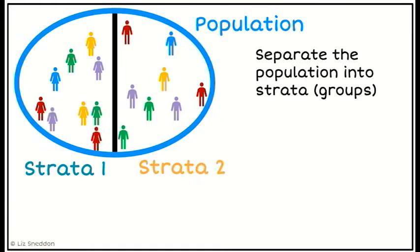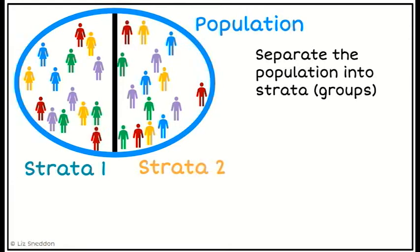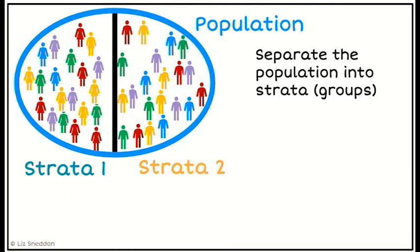But I could have other strata. I could separate by ethnic group, so I could have all the purple people together or the orange people or the yellow and the blues, the green. So I could separate it by different groups depending on what I'm interested in.